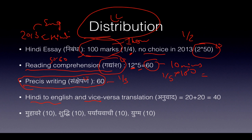Hindi to English and vice versa translation is called 'Anuwaad' — it comes for 20 marks each way, so Hindi-to-English and English-to-Hindi combined is 40 marks. So the total is: 100 (essay) + 8+8=240 marks in comprehension sections + 40 (translation) = 300 marks total.